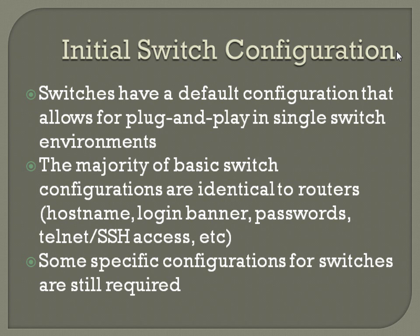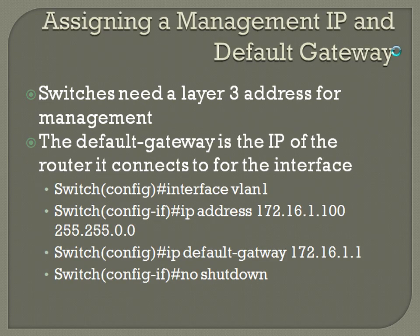Some specific configuration for switches is still required. One of those is assigning a management IP and a default gateway. Since a switch is a Layer 2 device, if you ever want to Telnet into it or access it by any method other than console to make changes, you won't be able to at Layer 3 because it doesn't have an IP address. That's what a management IP is for — it's an IP address used just so you can access the switch for configuration changes. The default gateway is the IP of the router it connects to.